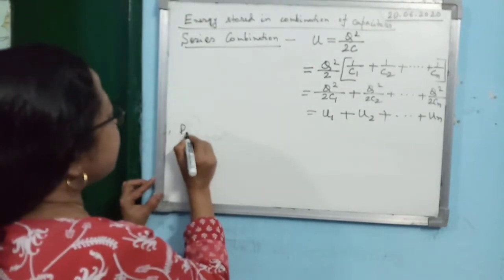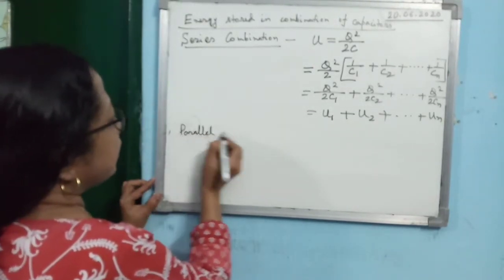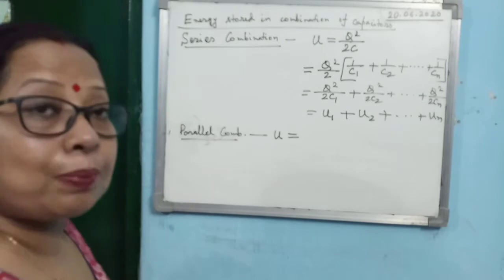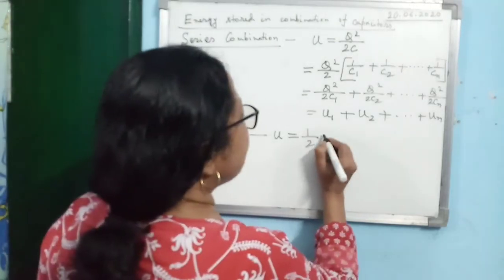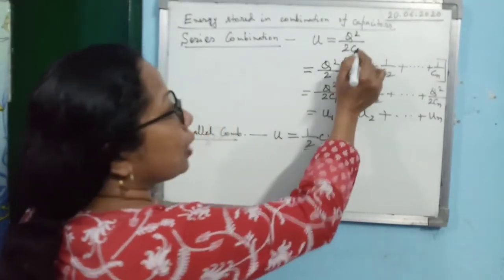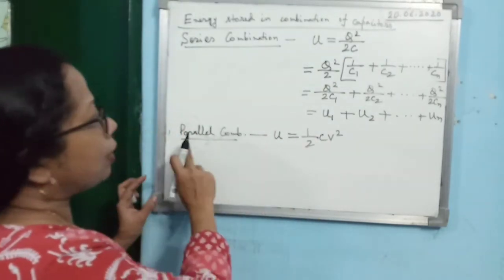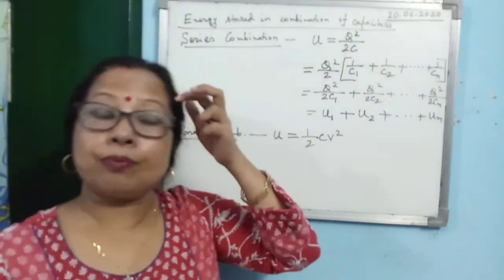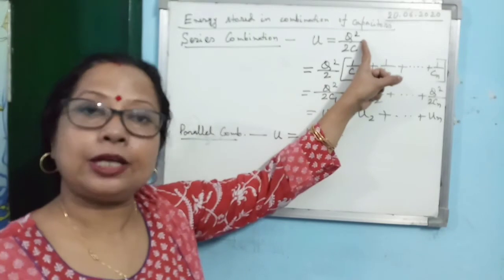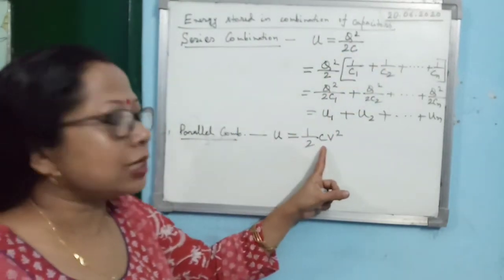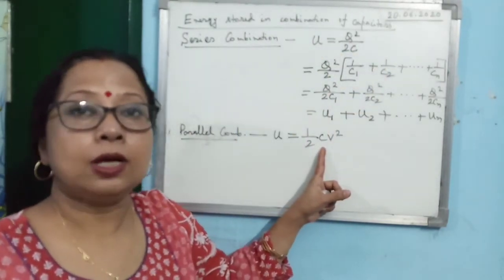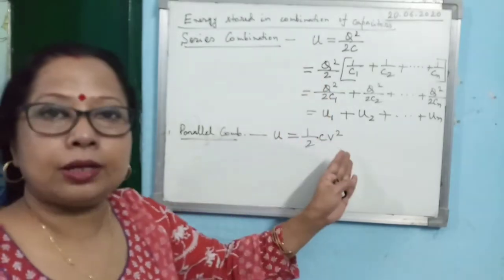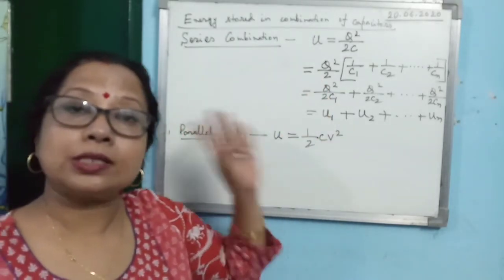Next, for parallel combination, which expression for energy will we use — ½CV² or q²/2C? We use ½CV² for parallel combination because in a parallel combination, voltage V is the same for all capacitors, not charge Q. So we will not use q²/2C for parallel combination; we will use ½CV². This is the key point — we must choose the expression where the quantity other than capacitance remains the same for all.